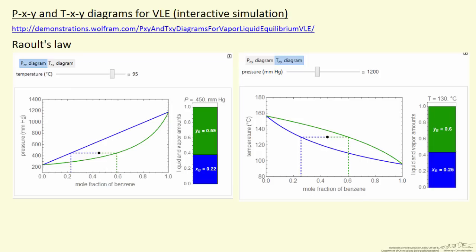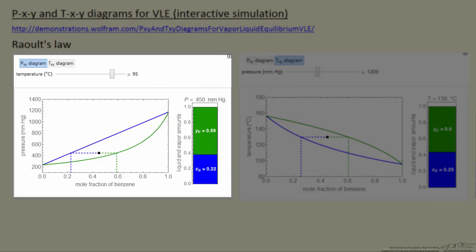Basically, the simulation shows two types of plots: a pressure-mole fraction diagram. What the simulation allows you to do is change the temperature by moving the slider on the top, and you can also move the black dot around.